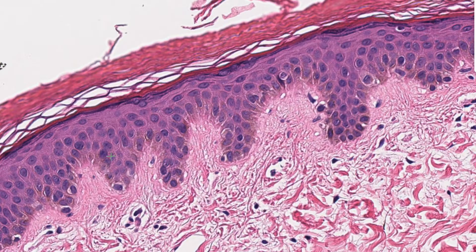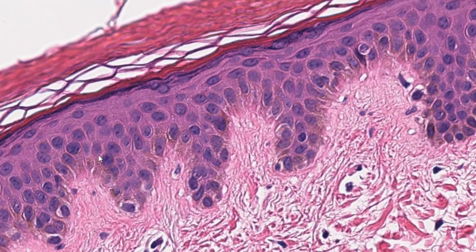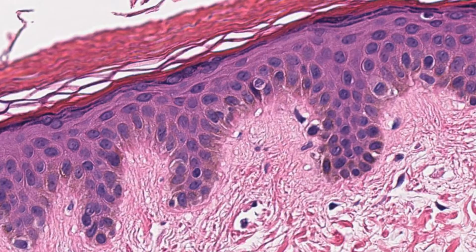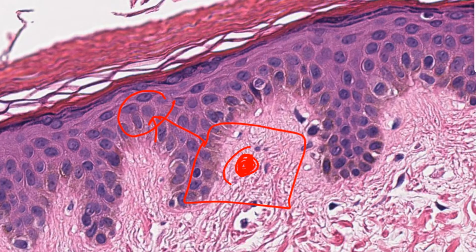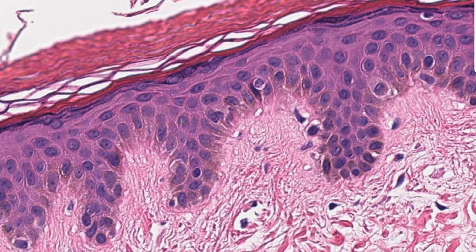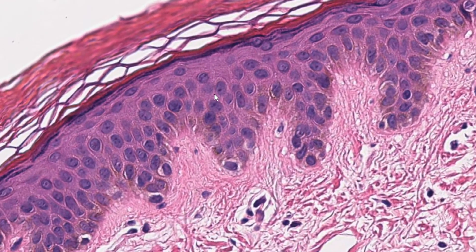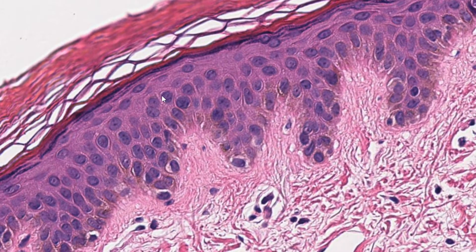Just above the stratum basale, several cell layers deep, is the stratum spinosum. At higher magnification, you can see that each cell has little tiny processes — spinous processes — that connect it to the neighboring cells. That's why it's called stratum spinosum. You can see these tiny spines coming out of each cell, like intercellular bridges.